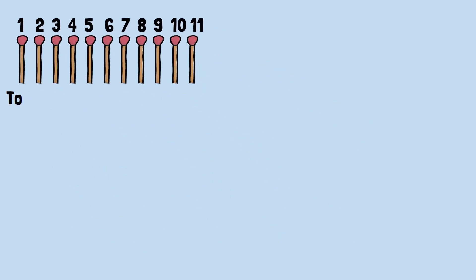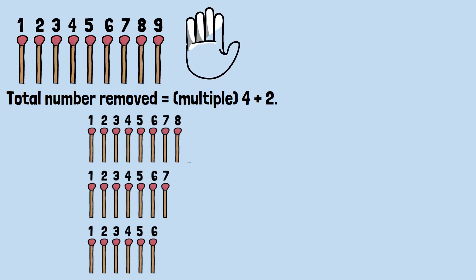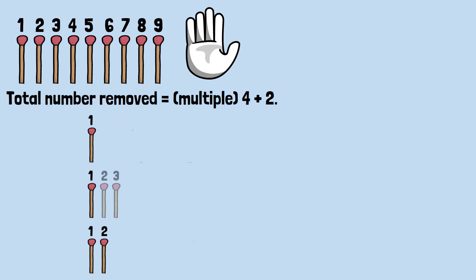From then on, whatever your opponent takes, you respond to bring the total number removed to a multiple of 4 plus 2. You take 2, 9 remaining. Opponent takes 1, 2, or 3: 8, 7, or 6 remaining. You respond to leave exactly 5, taking 3, 2, or 1, respectively. This pattern continues until your opponent must take the final stick.